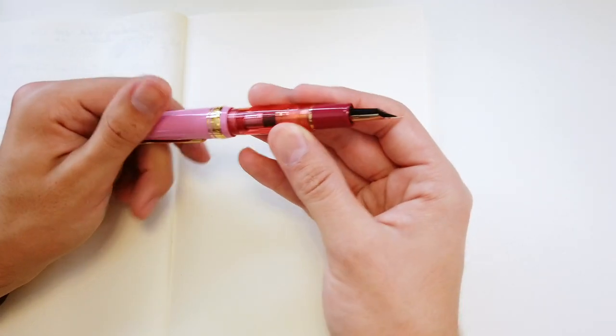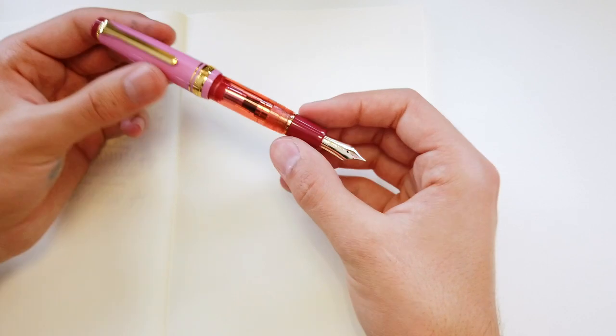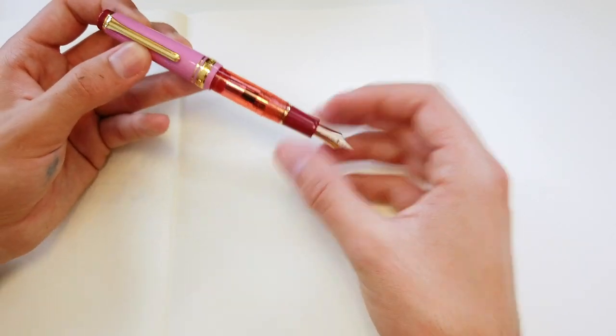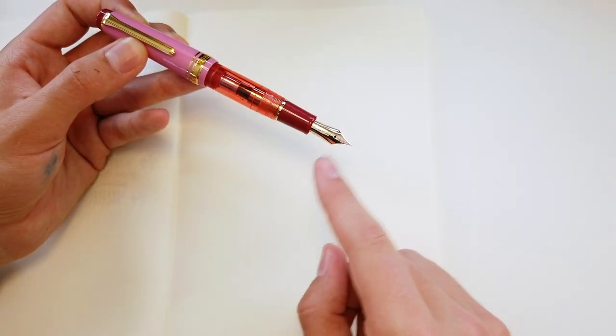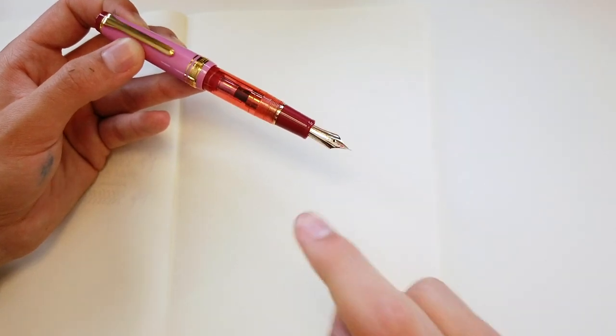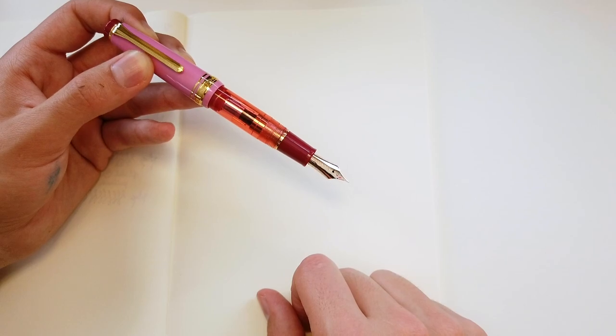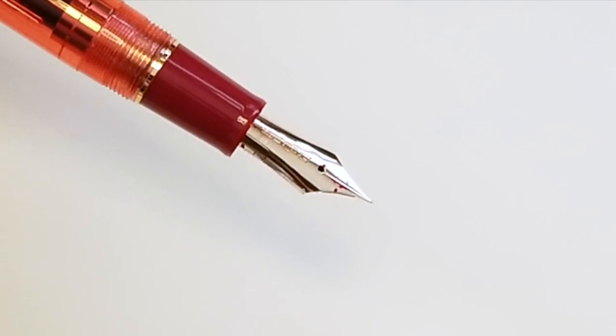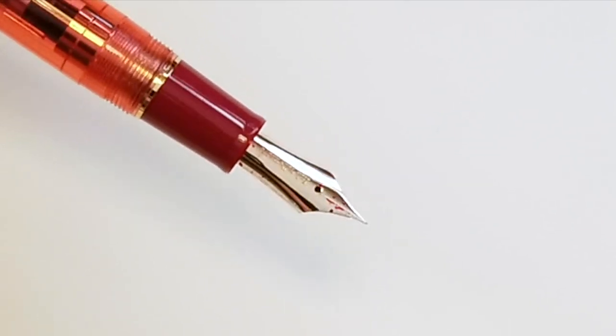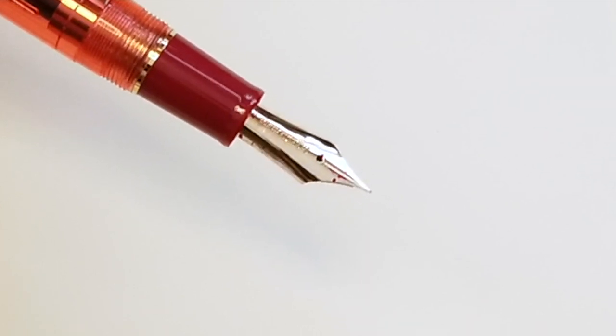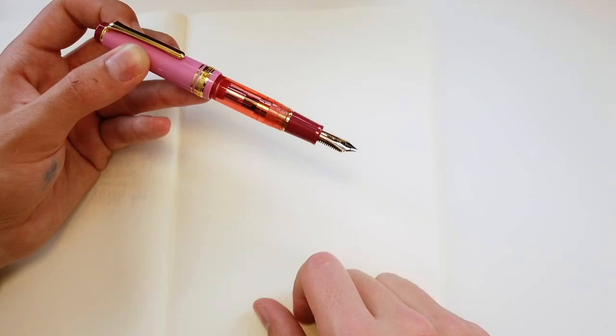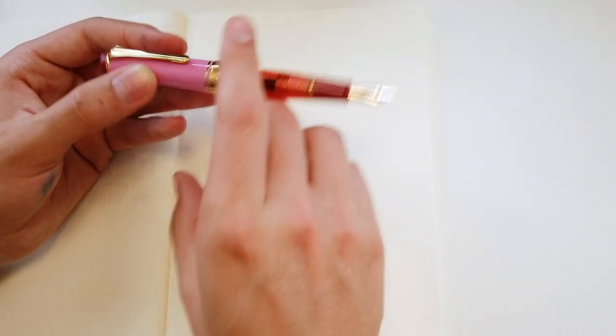It's the same proportions as a Progear Slim Mini, which is much more common, but it has the full-sized grip section and 21-carat gold nib. The nib is swapped from my BunguBox Progear, which I'll show you later. It's a 21-carat gold extra fine, which I find actually really smooth and fairly wet, which I was kind of surprised by, but a pleasant surprise it was.